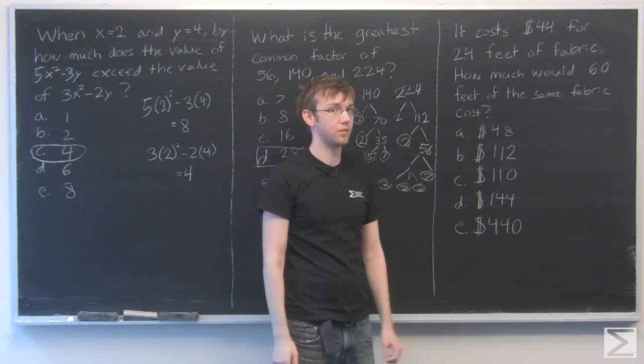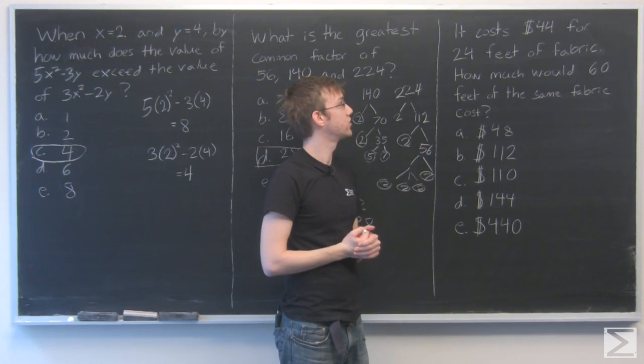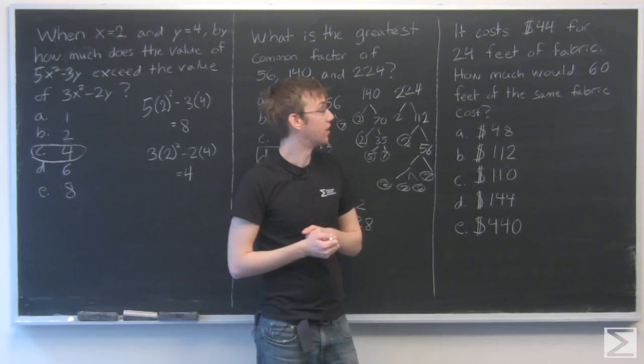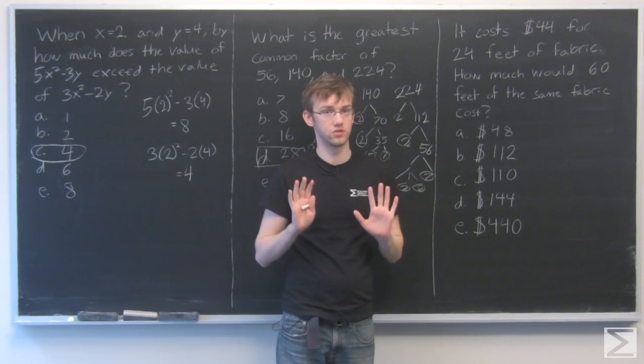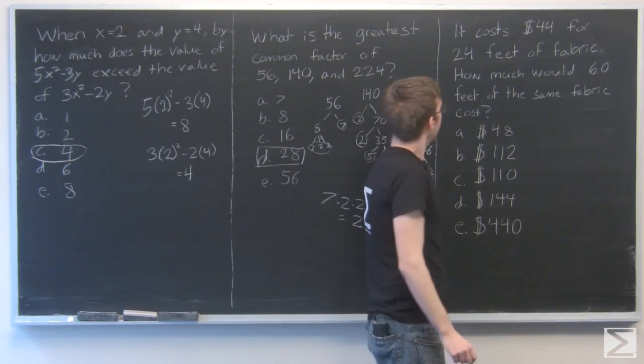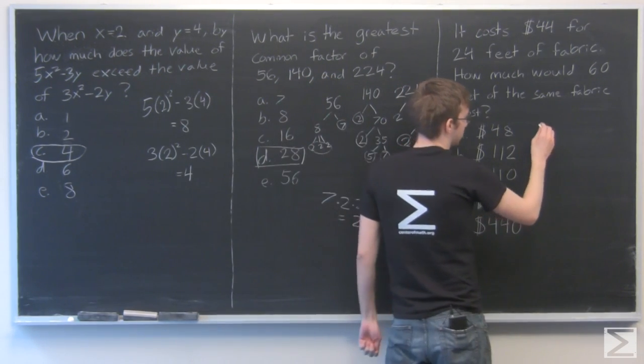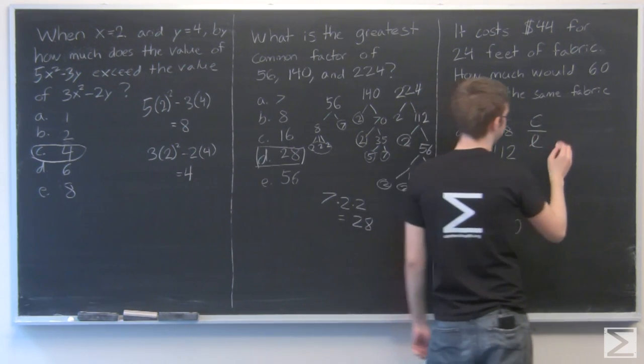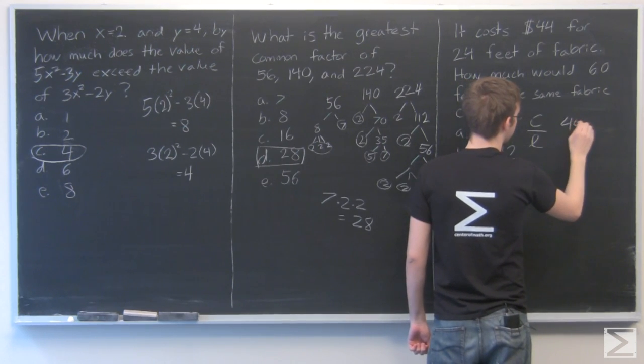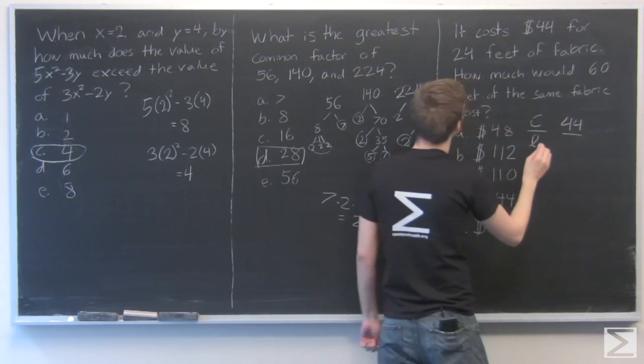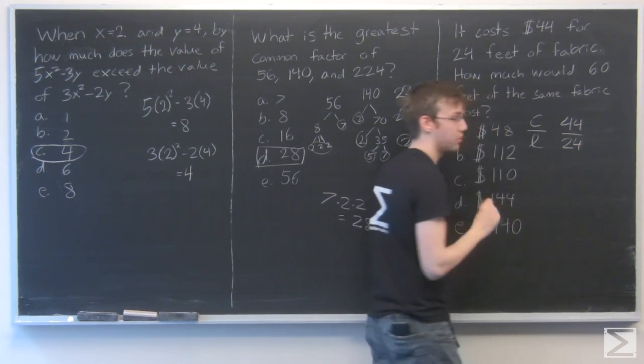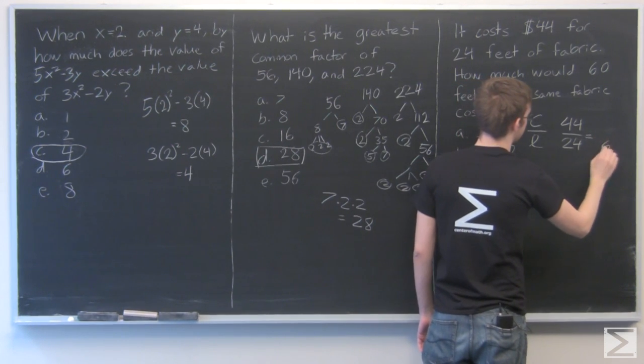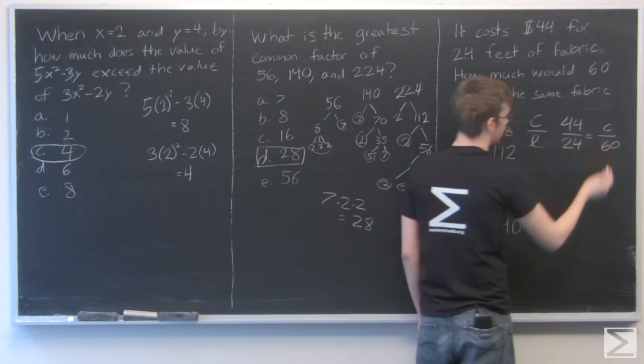Finally, we have a word problem. It's about ratios. It says it costs $44 for 24 feet of fabric. How much would 60 feet of the same fabric cost? So we can set up a ratio to compare these two proportions. Let's do cost on top. We'll do cost over length. So we have $44 over 24 feet. And the proportion is going to be the same for 60 feet and our unknown cost on top.